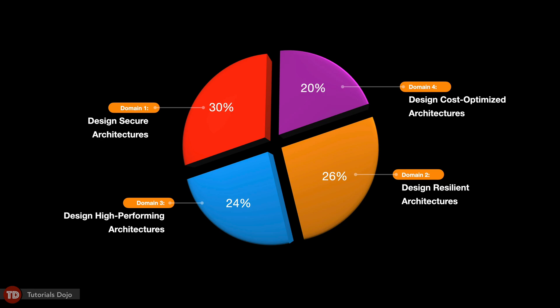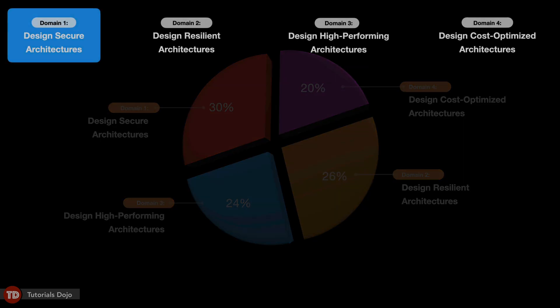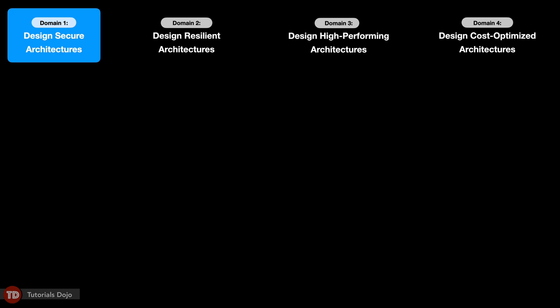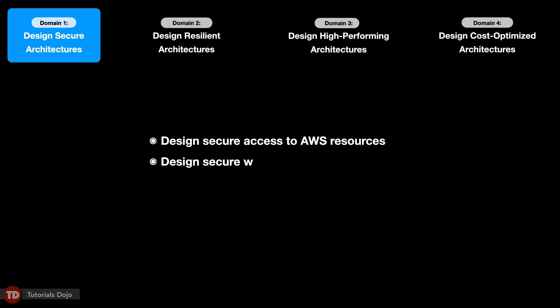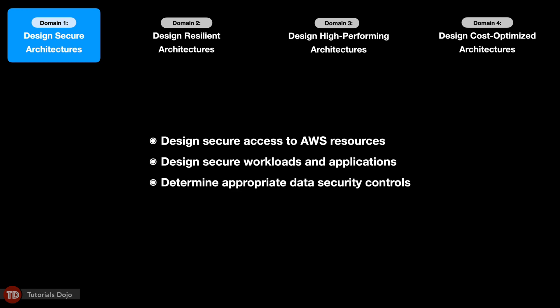The Design Secure Architectures exam domain is focused on checking your knowledge in designing secure architectures in AWS. It has the biggest domain weight in the exam at 30% coverage, so you must allocate significant time to study the various concepts covered in this domain. The scenarios in this section check your know-how in designing secure access to AWS resources, designing secure workloads and applications, as well as determining appropriate data security controls.